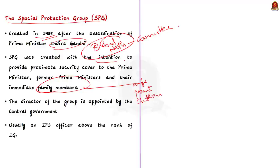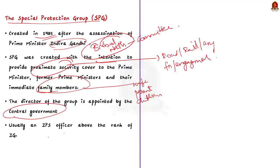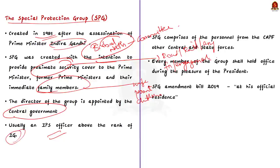See proximate security is nothing but the protection provided during journey by road, rail, aircraft, water, or any mode of transport. It includes the places of functions, engagements or even residence. The director of SPG is appointed by the central government. See the director is usually an IPS officer above the rank of inspector general that is IG. SPG comprises of the personnel from the CAPF like CRPF, BSF and it also includes central and state forces. Every member of the group shall hold office during the pleasure of president. That means they can be removed by the president at any time and the SPG inhabits various methods of security and they collaborate with IB and state police forces.